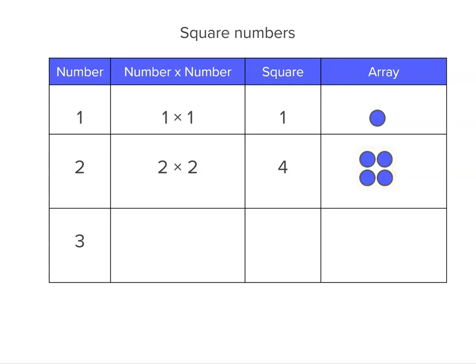Now the number 3 times itself, 3 times 3 is 9. So a square number is also 9. 9 is the square of 3. And we can make an array 3 by 3. And you can see again, it looks like a square.